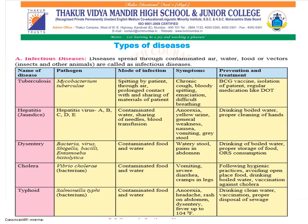The mode of infection in all these diseases is majorly contaminated water, contaminated food, and blood transfusion. Symptoms generally include watery stool, pains in the abdomen, anorexia, yellow urine, weakness, vomiting, gray stool, diarrhea, and cramps in the legs. Prevention and treatment differ: for hepatitis, drinking boiled water and proper cleaning of hands; for dysentery, drinking boiled water and proper storage of food; for cholera, following hygienic practices, avoiding open-place food, drinking boiled water, and vaccination against cholera; and for typhoid, drinking clean water, vaccination, and proper disposal of sewage.